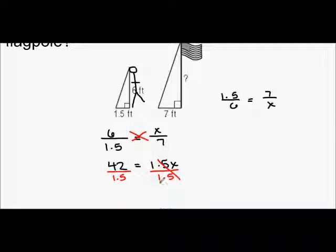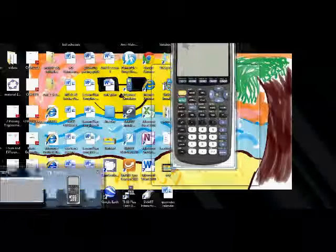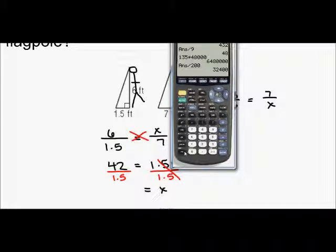And X is, let's check it out, 42 divided by 1.5 is 28.